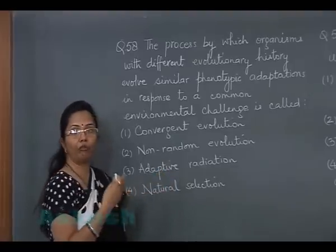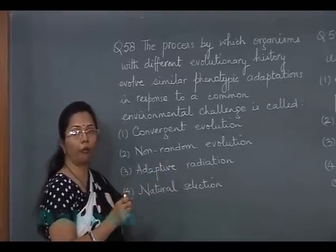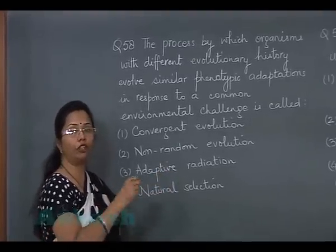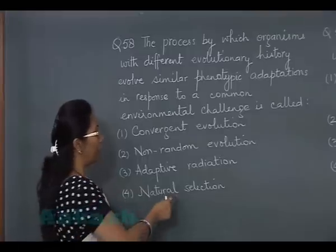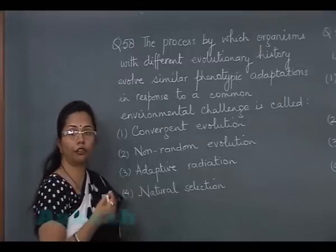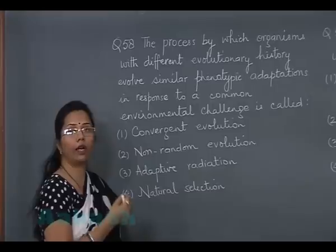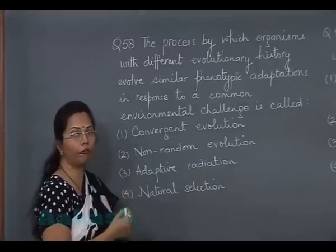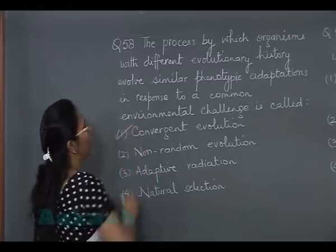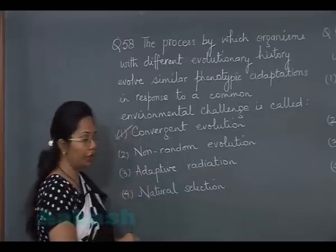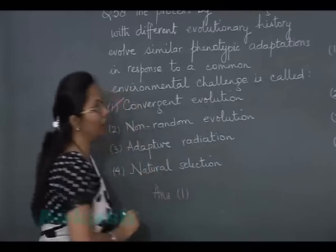Adaptive radiation would involve speciation starting from a single point and filling different geographical habitats. Natural selection is a selective force that selects for fitness, specifically reproductive fitness. So the correct answer is convergent evolution — answer option 1.